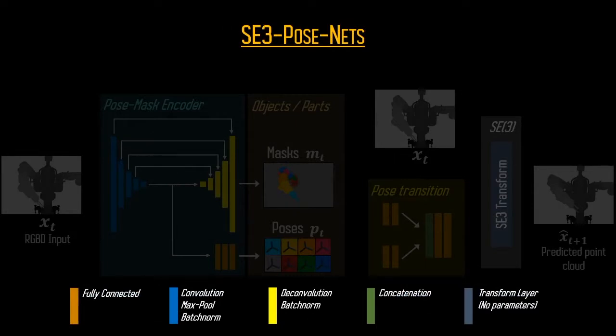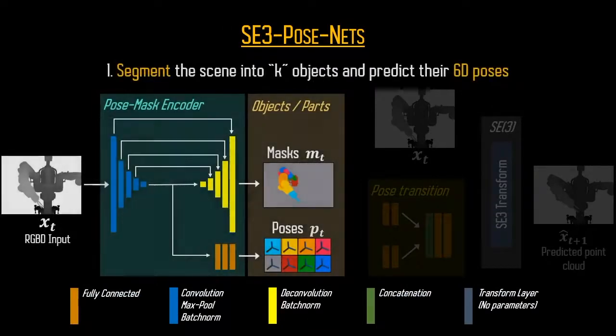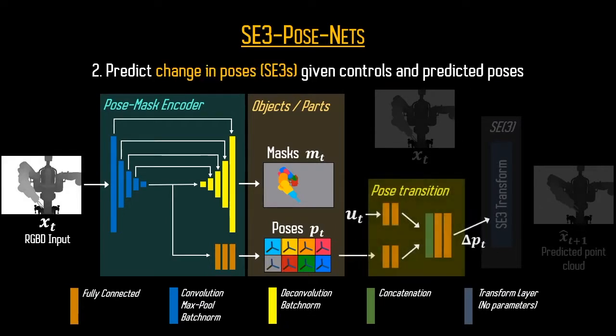Our dynamics model SE3 PostNets works as follows. Given an input RGBD point cloud, our model first segments objects in the scene and predicts their poses. Using these predicted poses and controls, we predict changes to the poses,